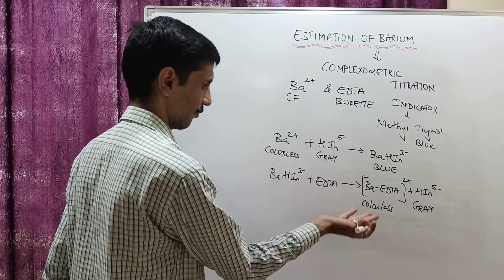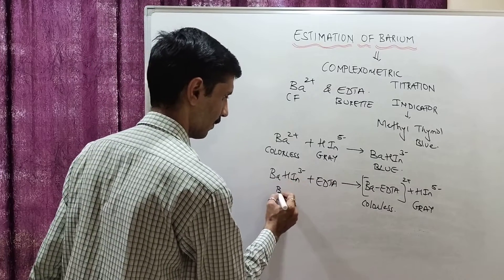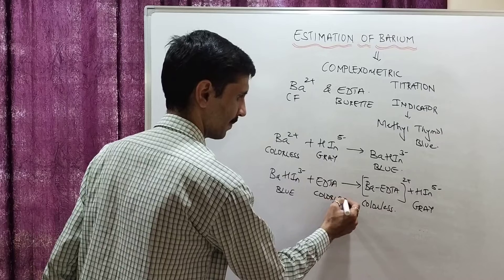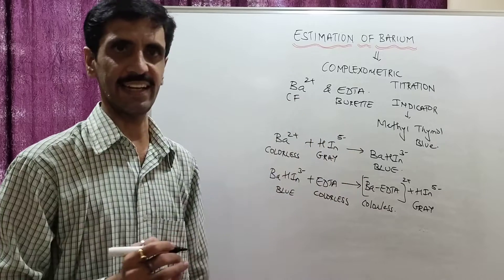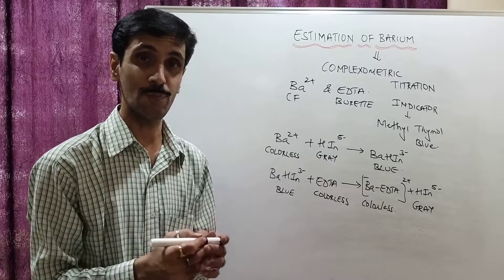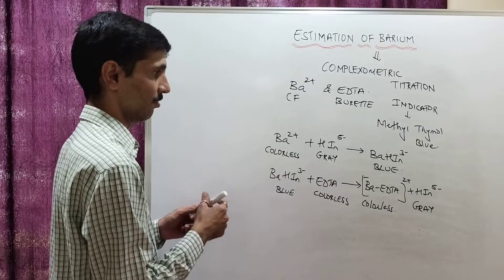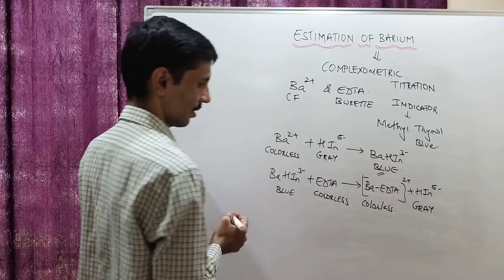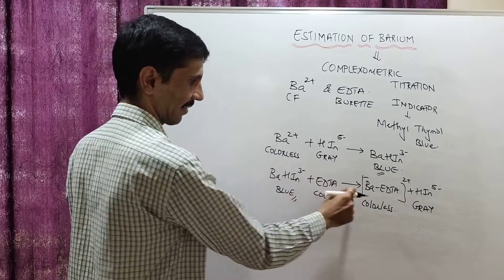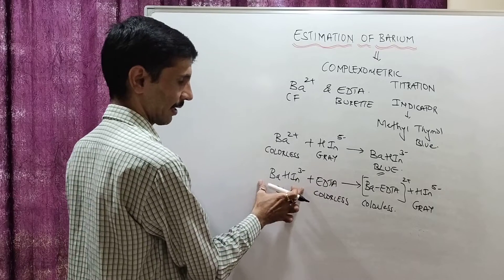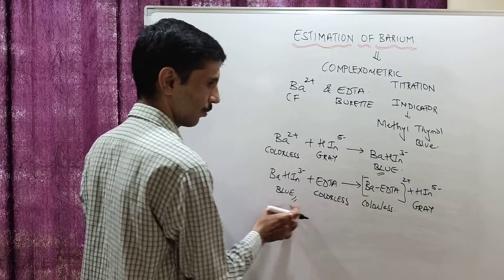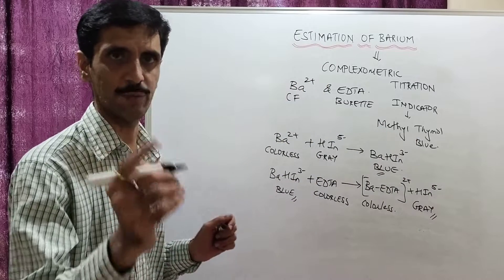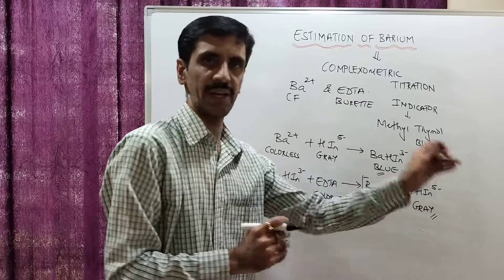The color of the free indicator is gray. The barium-EDTA complex is colorless, and EDTA itself is colorless. So the end point of the titration is from blue to gray — we start with a blue solution and end up with gray. That is the end point: blue to gray.